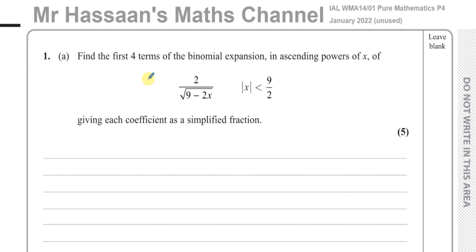Question number one is about binomial expansion. We have to find the first four terms in the binomial expansion in ascending powers of x of this expression: 2 over the square root of 9 minus 2x, where the modulus of x has to be less than 9 over 2. We have to give each coefficient as a simplified fraction.